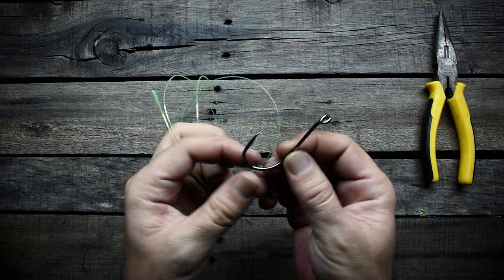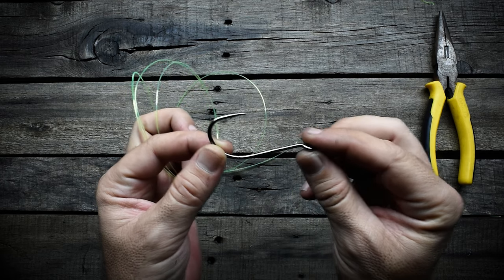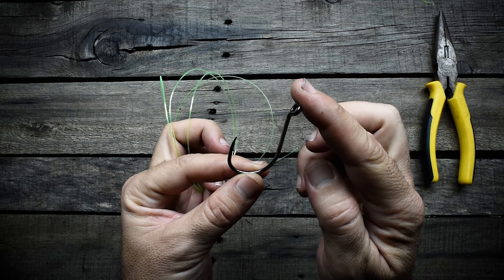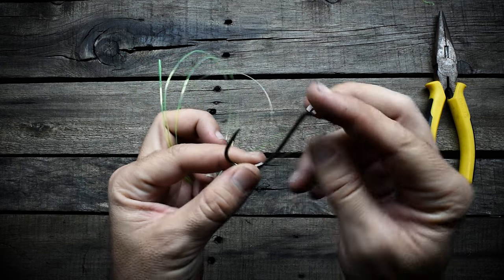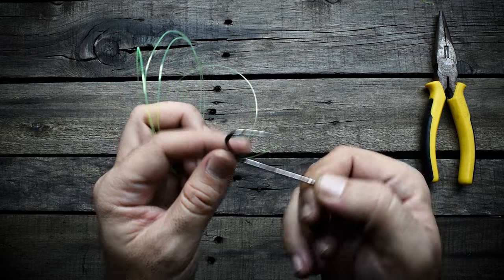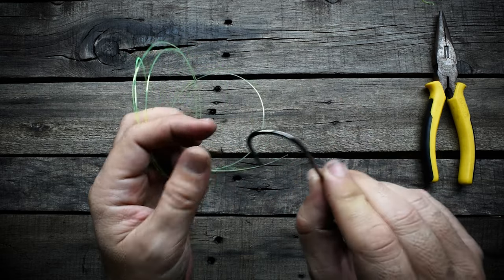And this hook - this is an octopus offset J hook. I use this hook for shark fishing. I either use this or I use a circle hook, but this works pretty well. I like this hook.